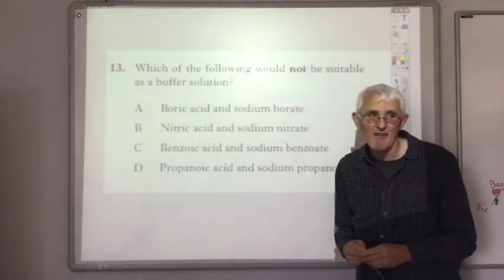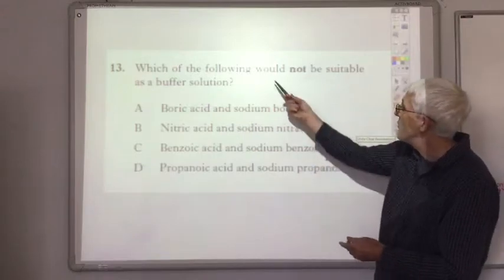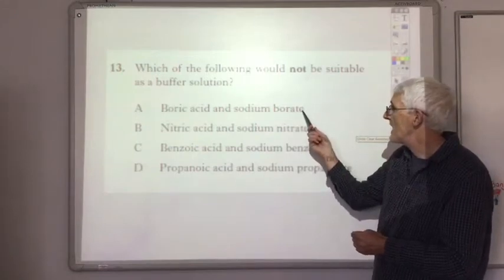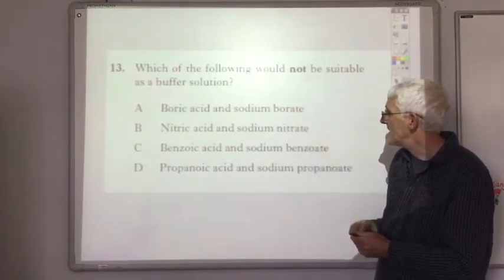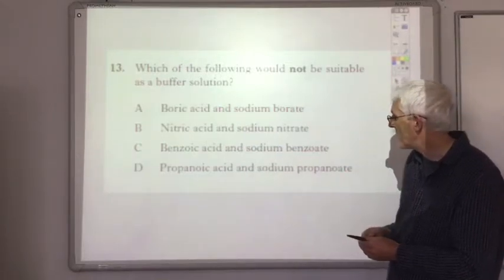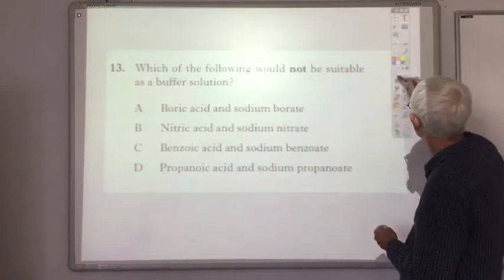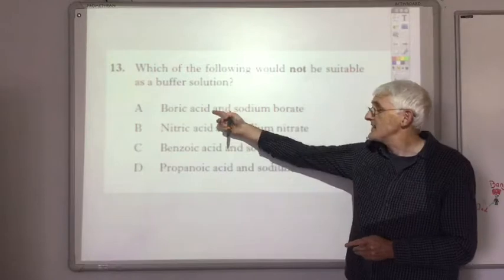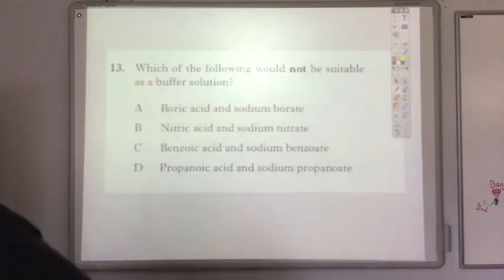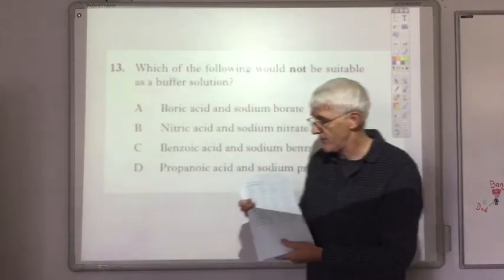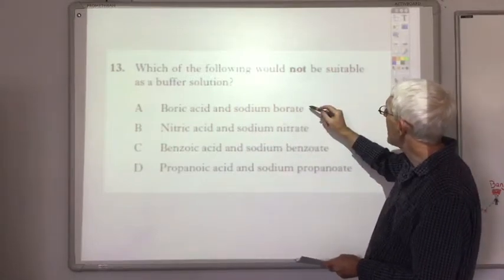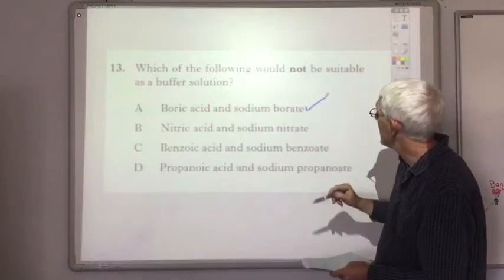Here's an example of a very common exam question. Which of the following would not be suitable as a buffer solution? A: boric acid and sodium borate, B: nitric acid and sodium nitrate, C: benzoic acid and sodium benzoate, D: propanoic acid and sodium propanoate. Well, boric acid is a weak acid—how do I know that? You'll find it in your data booklet. So you'll find boric acid listed here, and we've got the sodium salt, so that would be suitable. So that's not the correct answer.